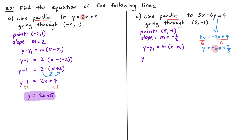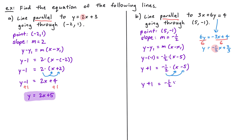Plugging in the values we have y - (-1) = -1/2 (x - 5), which simplifies to y + 1 = -1/2 (x - 5). Distributing gives y + 1 = -1/2 x + 5/2. Subtracting 1 from both sides gives y = -1/2 x + 3/2. This is the equation of the line parallel to 3x + 6y = 4 that goes through (5, -1).